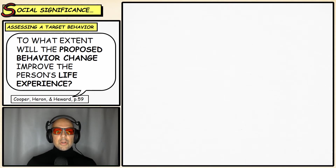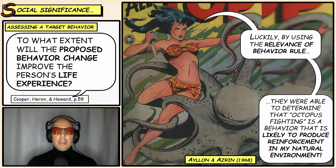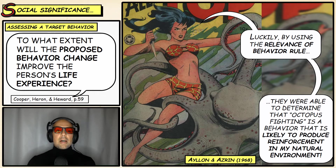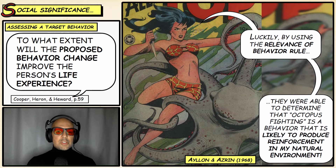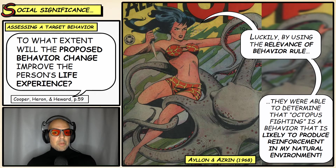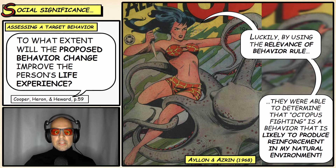The first criteria we introduce is known as the relevance of behavior rule. When assessing the social significance of a behavior, we should select behaviors only when it can be determined that the behavior is likely to produce reinforcement in a person's natural environment. We also need to know not just how the person behaves, but what environments they behave in — do they go to school, work, interact with people, or work more solitary? We need to know the natural environment in order to apply this relevance of behavior rule.